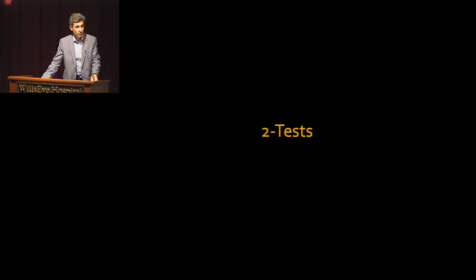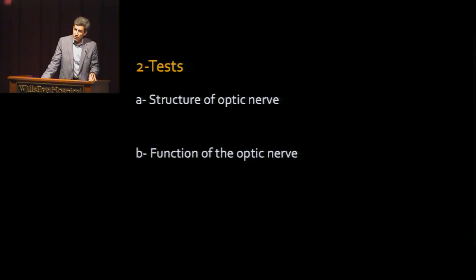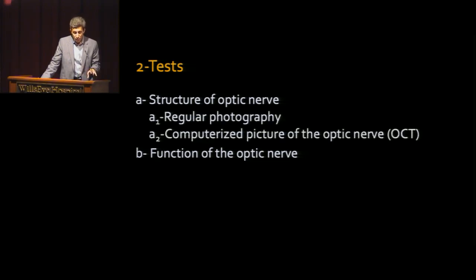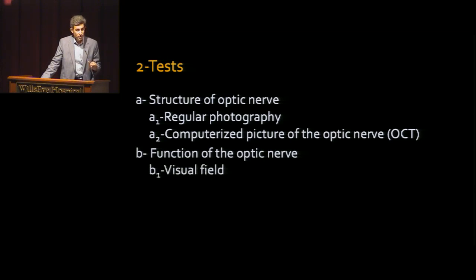Now let's talk about the tests. Glaucoma is an optic nerve disease, so we have two major ways to assess the function and the structure of the optic nerve. For structural tests, we have regular photography and a computerized test called OCT. For checking the function of the optic nerve, we use the visual field test.